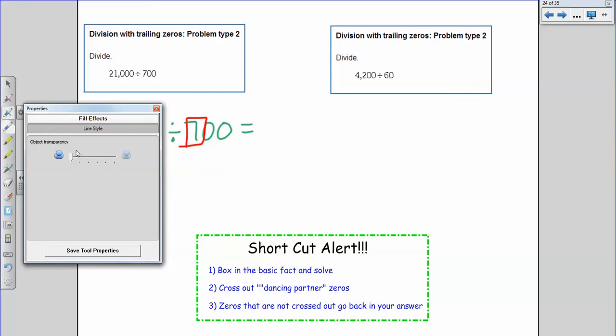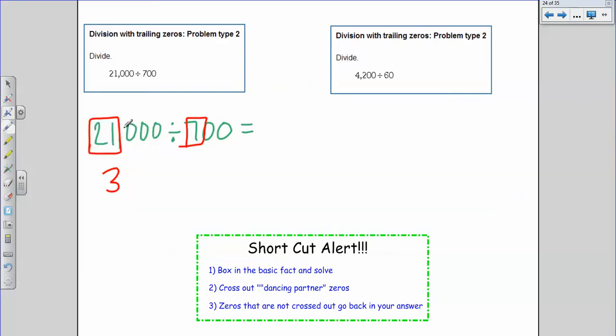Now the next thing I'm going to do is I'm going to start crossing out dancing partner zeros. I call them dancing partners. I don't know why, but I do. So I have a zero here. It has a partner on this side that has a zero. This partner has a zero. Does this zero have a partner over here in 700? No.